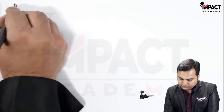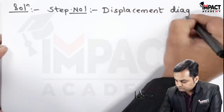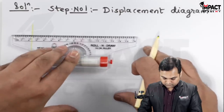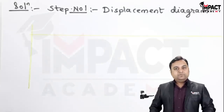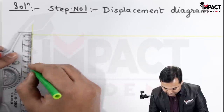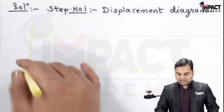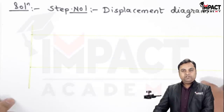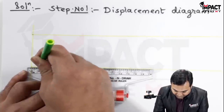In the solution, the first step is to draw the displacement diagram. The lift given in the problem is 60 mm, so I will take 60 mm as the height. For the outstroke of 60 degrees, I convert it to a linear distance of 6 centimeters where 1 centimeter indicates 10 degrees, then divide it into 6 equal parts.